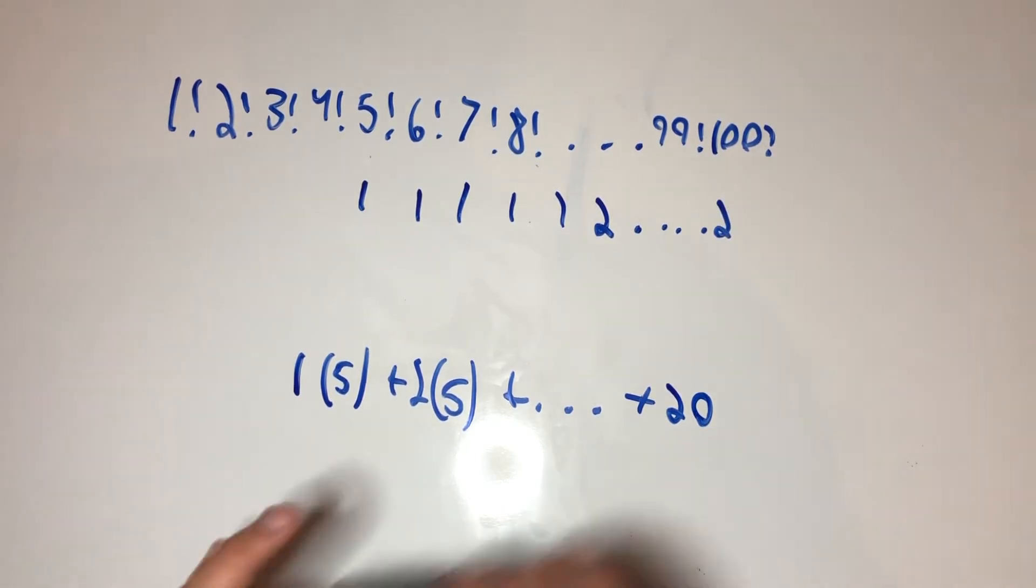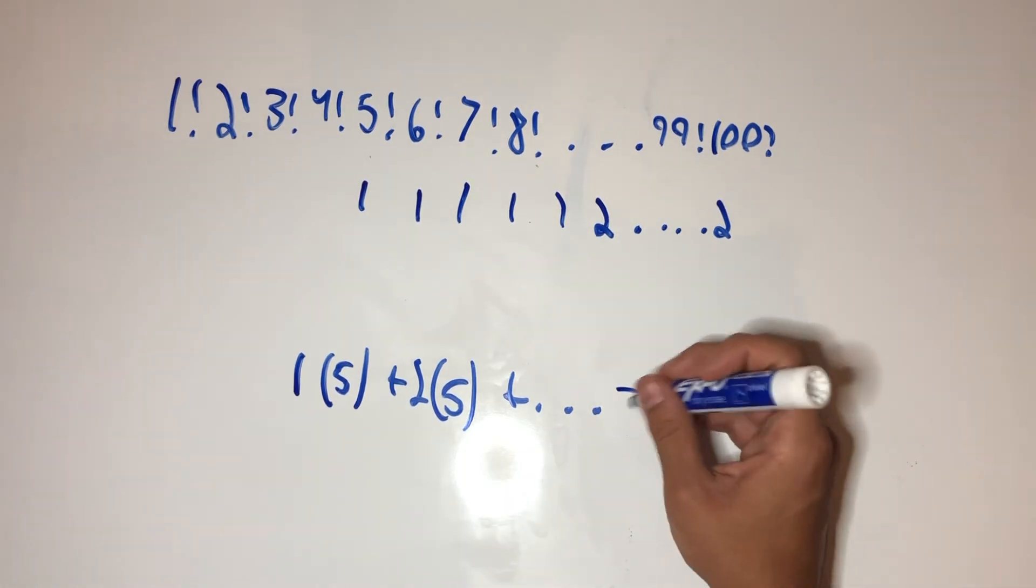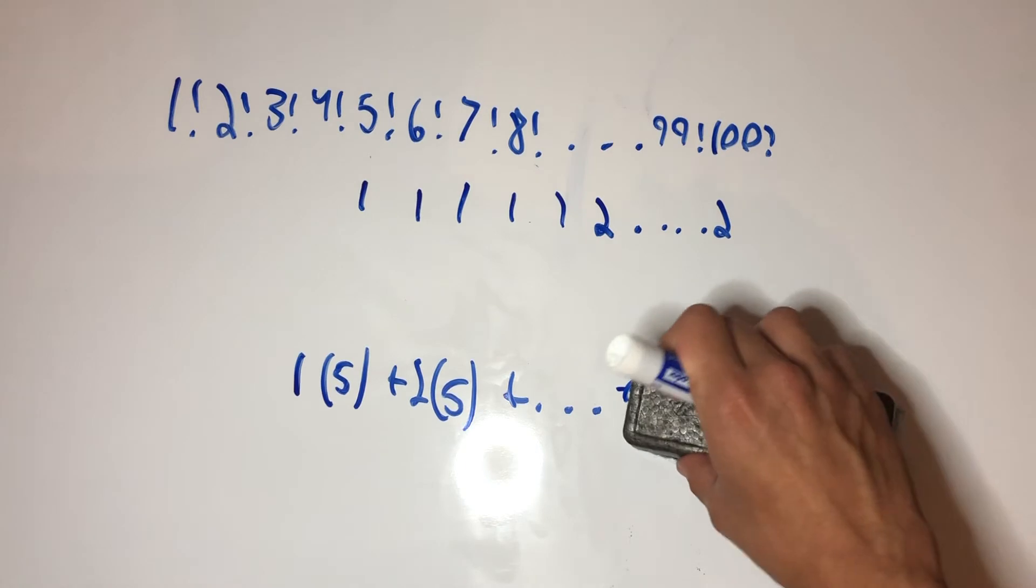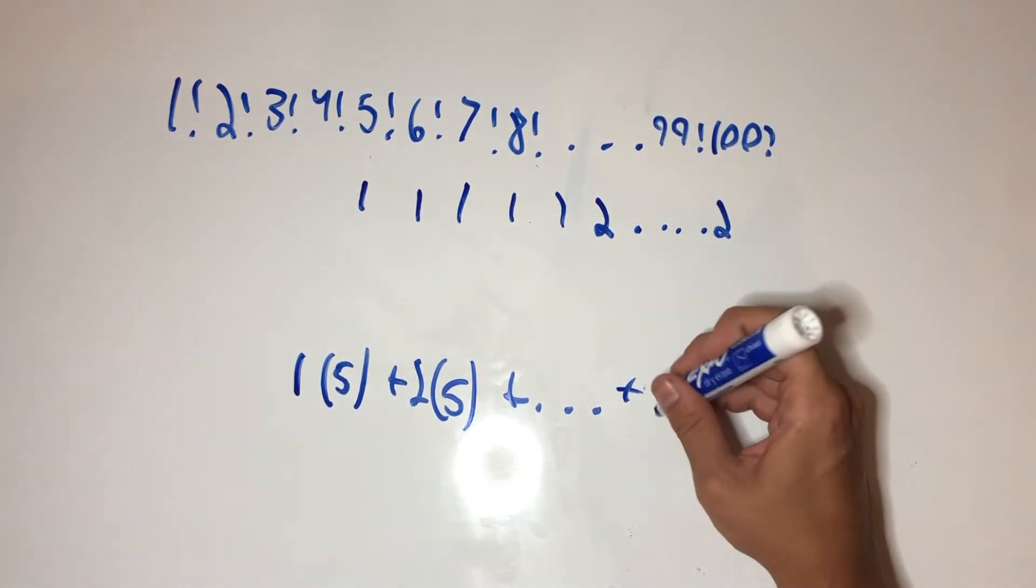So, let's get rid of that 20. Let's go, plus 99 times 5, no sorry, my bad, 19 times 5, because 19 factors of 5.